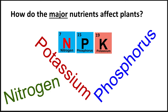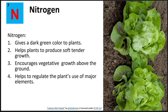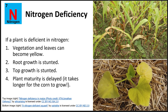So how do the major nutrients nitrogen, phosphorus, and potassium affect plants? Nitrogen encourages vegetative growth, producing a healthy green plant. It also helps regulate the plant's use of the macro or major elements. Nitrogen deficiency results in stunted plants that may also be yellow in color. Root growth slows, and plant maturity delays.